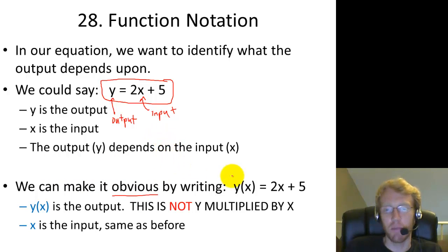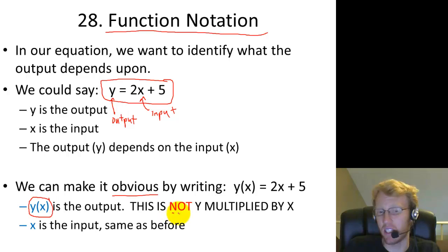And the way that we can do that is by using what's called function notation. So function notation is when you change the output from being a single variable to being this kind of complex symbol that looks a lot like y times x but it's not. It's definitely not y times x. You pronounce this y of x and what it's telling you is the output value is y but these parentheses, it's telling you that the output value y depends on x or whatever was inside of those parentheses.